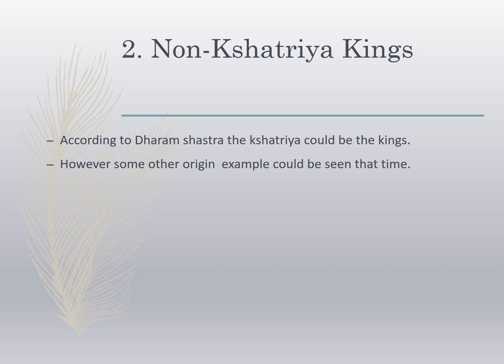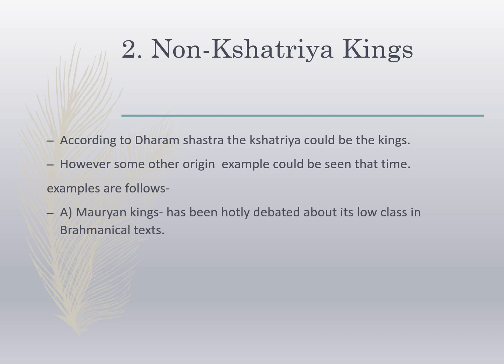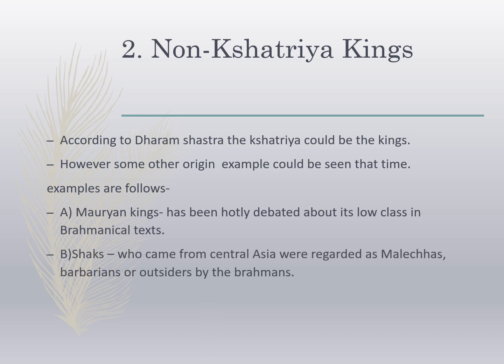Later Buddhist texts suggested the Mauryas were Kshatriyas, while brahmanical texts described them as being of low origin. The Shungas and Kanvas, immediate successors of the Mauryas, were Brahmins. In fact, political power was effectively open to anyone who could muster support and resources, and did not really depend on birth as a Kshatriya. Other rulers such as the Shakas, who came from Central Asia, were regarded as mlechchas — barbarians or outsiders — by the Brahmins.